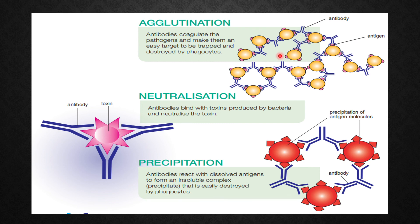They are coming together — we say they are clumping, they are agglutinating. This makes them an easy target to be trapped and destroyed by the phagocytes, the white blood cells that engulf them by means of phagocytosis.